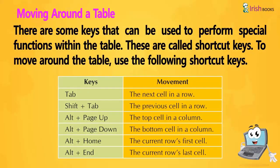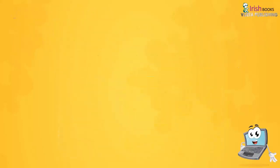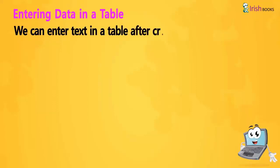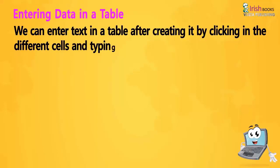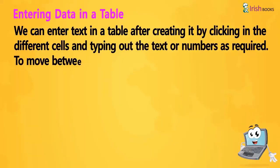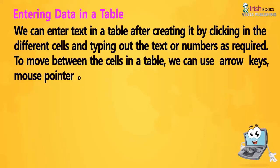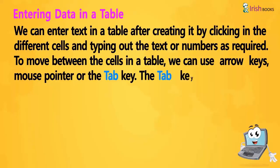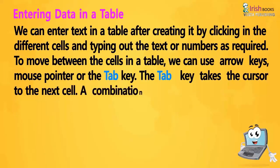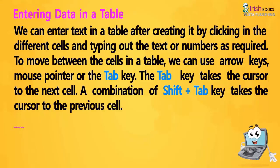Entering data in a table. We can enter text in a table after creating it by clicking in the different cells and typing out the text or numbers as required. To move between the cells in a table, we can use arrow keys, the mouse pointer, or the Tab key. The Tab key takes the cursor to the next cell; a combination of Shift+Tab takes the cursor to the previous cell.